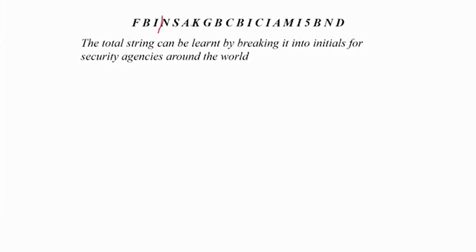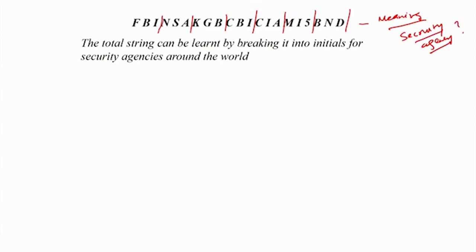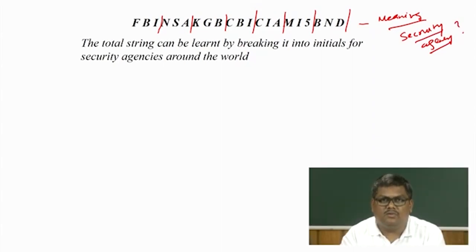One way to remember a whole string is to understand that it contains acronyms from famous detective or security agencies of the world. So you can break it into chunks: FBI is one agency, NSA is another, KGB is an agency, CBI is an agency, CIA is an agency, MI5 is an agency, and BND is an agency. These can be chunked into smaller chunks where the meaning of the bin holding them together is 'security agencies,' allowing you to remember the entire string.